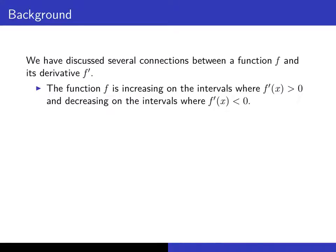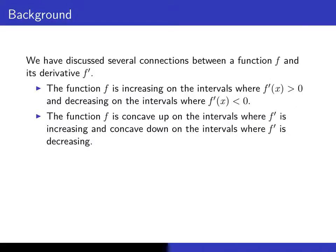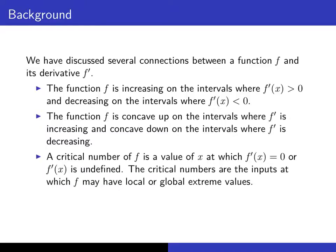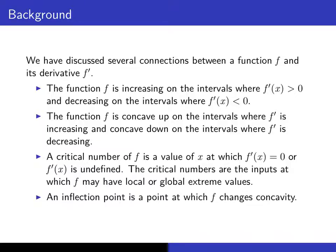We've already made connections between a function and its derivative — particularly if a function is increasing on an interval where its derivative is positive, decreasing when the derivative is negative. Functions are concave up on the intervals where the derivative is increasing, in other words where the second derivative is positive, and concave down where f prime is decreasing. We have critical numbers of a function where the derivative is zero or doesn't exist.